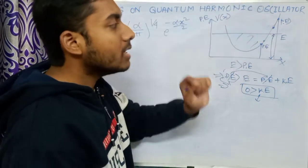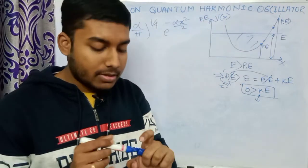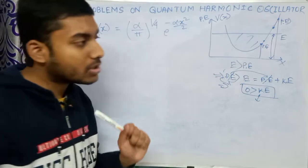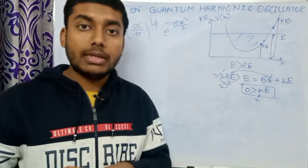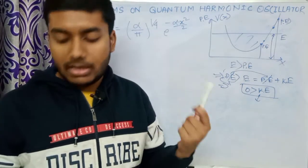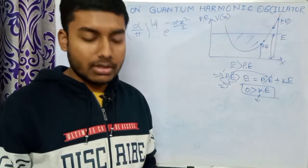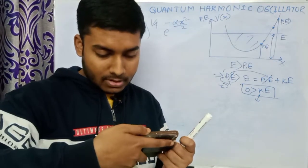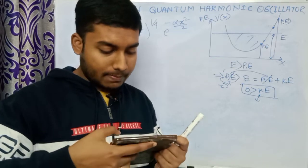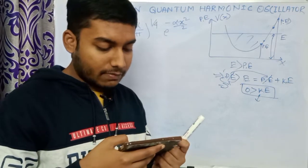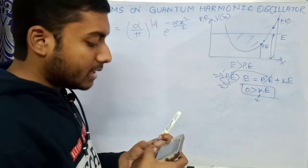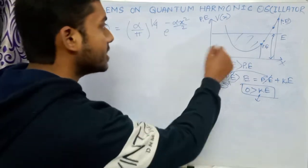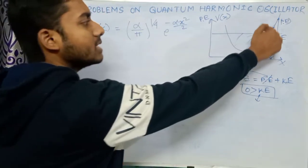In this question, we have to find the probability of finding the particle outside the classically allowed region — that is, in the classically unallowed region.